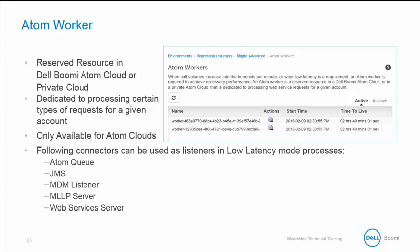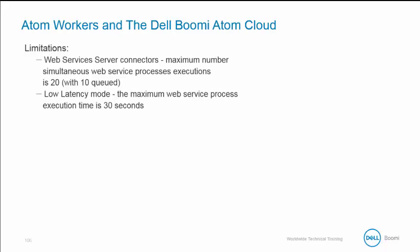If you use the Dell Boomi Atom cloud and would like to enable atom workers in your account, or if you would like to have more atom workers enabled, please contact your Dell Boomi representative. If you are using an atom worker on the Dell Boomi Atom cloud, the following limitations apply: for Web Services Server connections, the greatest number of simultaneous Web Service Process Executions is 20, with 10 queued. For low latency mode requests running on the atom worker, the greatest Web Server Process Execution time is 30 seconds. You can set a process to use low latency in the Process Options dialog.